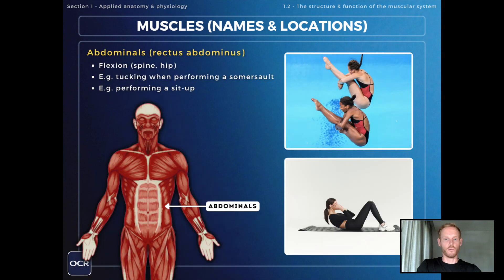The abdominals or rectus abdominis muscles create flexion in the spine and hip joints. So we're looking at examples like tucking when performing a somersault or performing a sit-up.